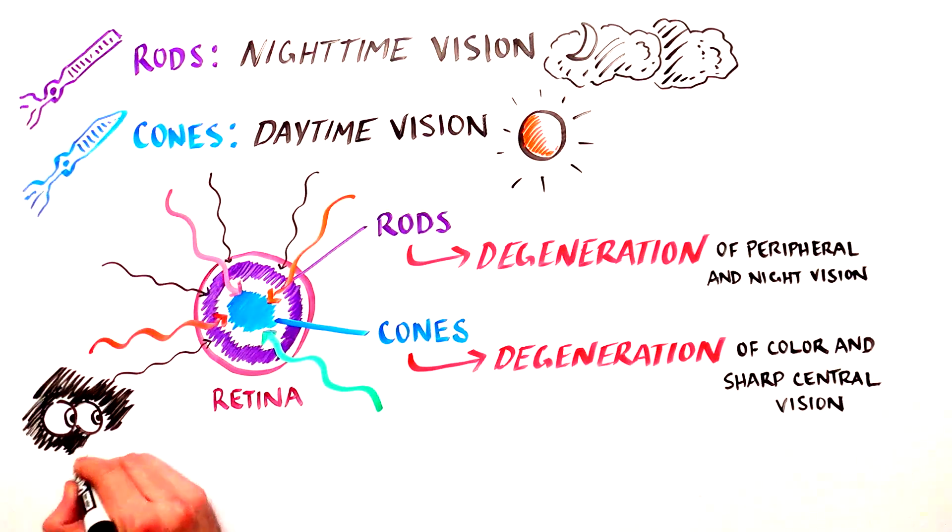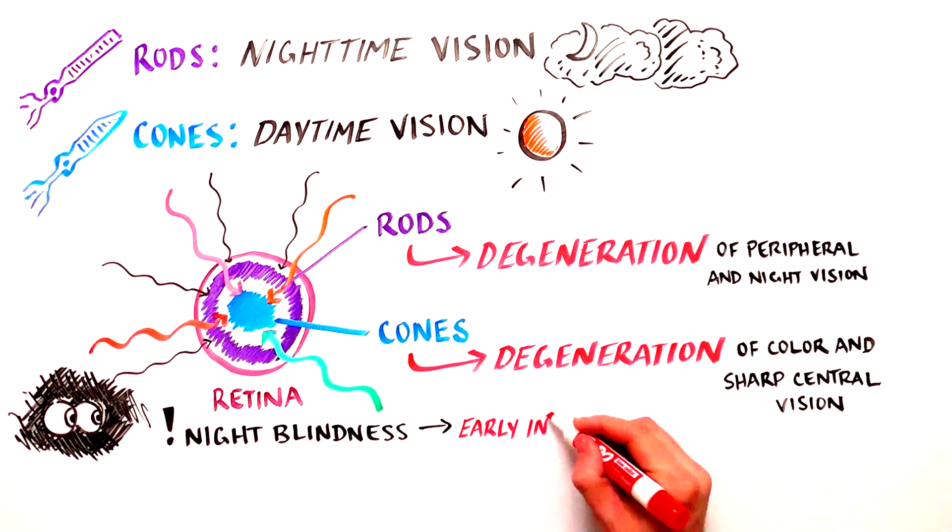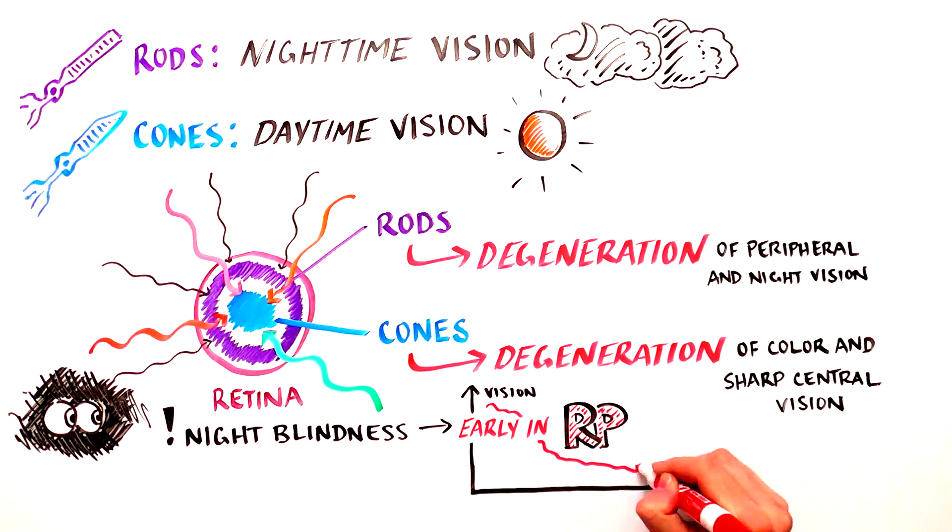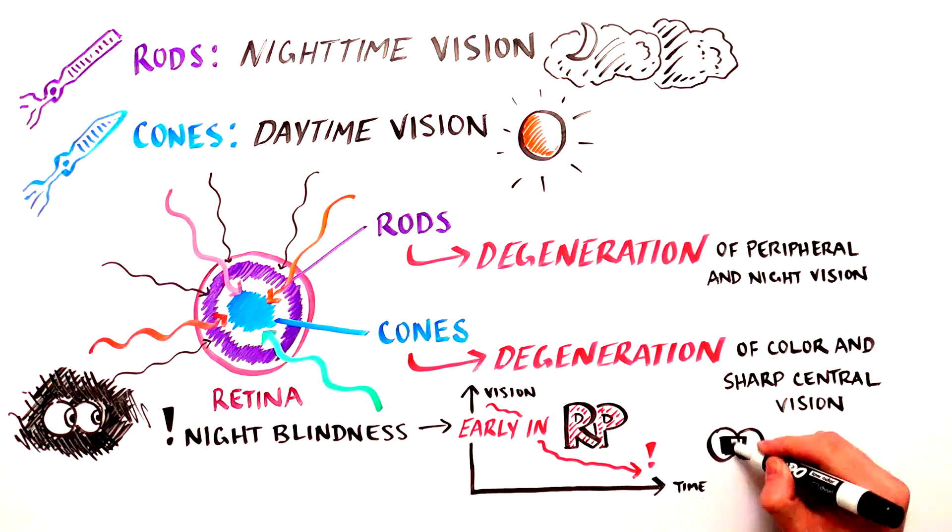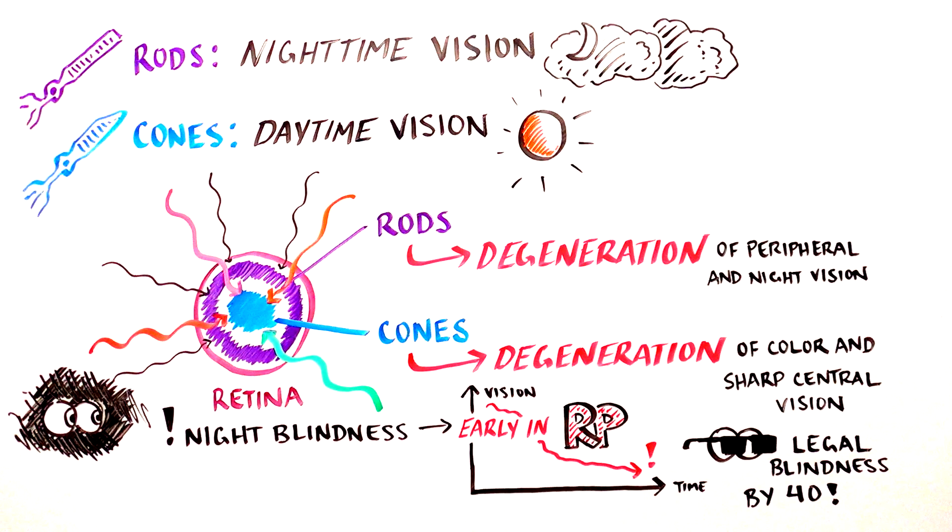Night blindness is one of the earliest and most frequent symptoms of RP, since the rods degenerate first. Over time, RP patients experience further vision deterioration, develop tunnel vision, and eventually legal blindness by the age of 40.